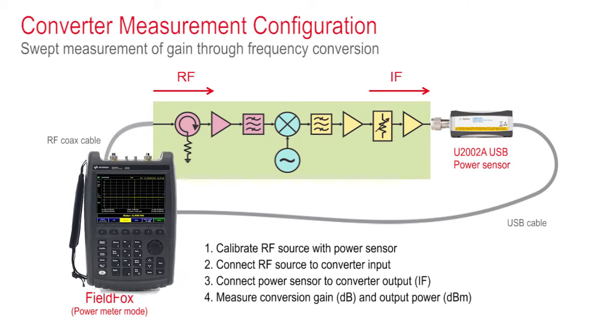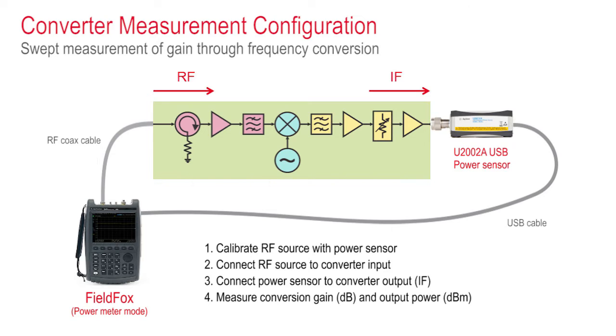Using FieldFox as a source and controller for the USB power sensor, we're able to show the ratio of the RF range to the IF range on the same x-axis as conversion gain.